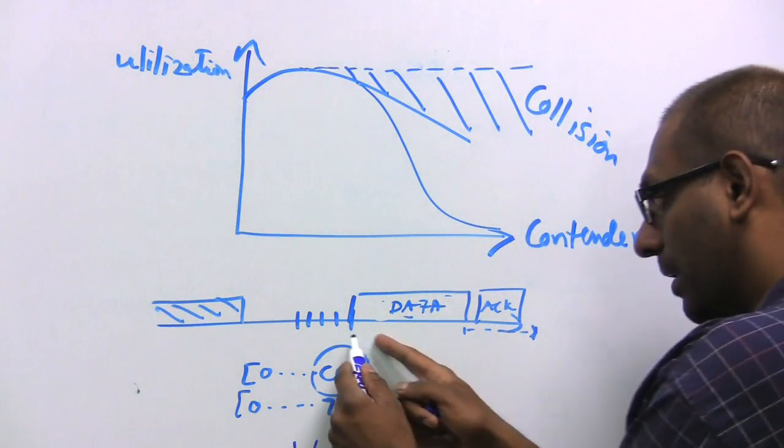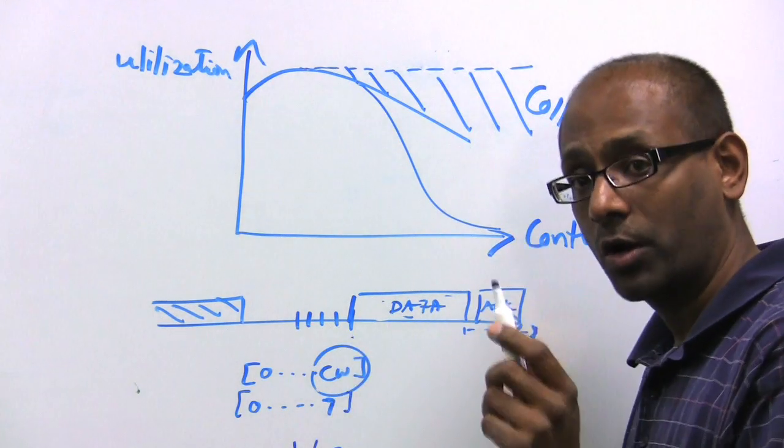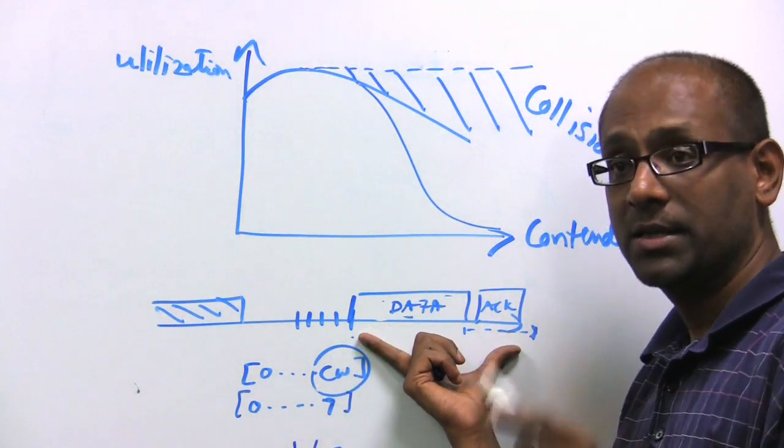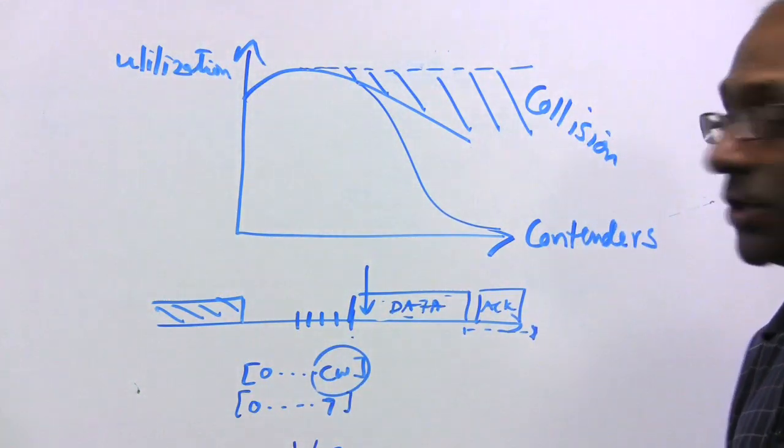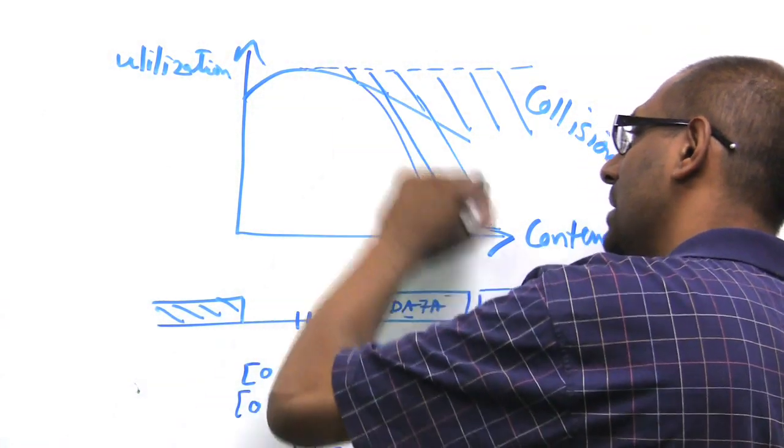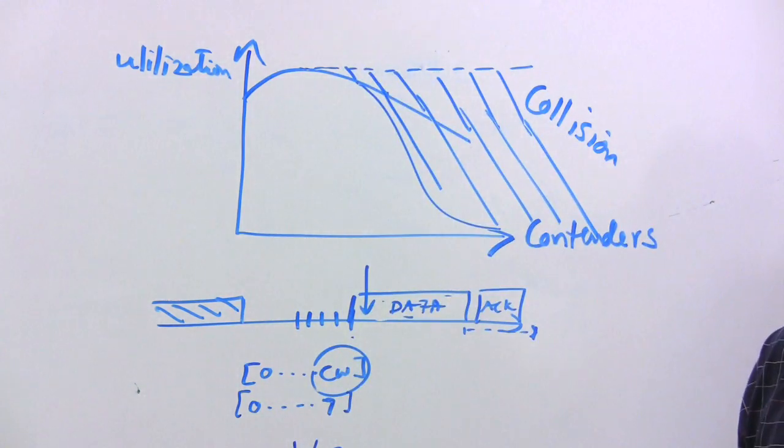Notice that the amount of time that it takes to resolve a collision is a heck of a lot longer in 802.11 than it is in Ethernet, where you would detect a collision right away. So the penalty for collisions is higher, and hence, as the number of collisions start to increase, the throughput starts to drop off.